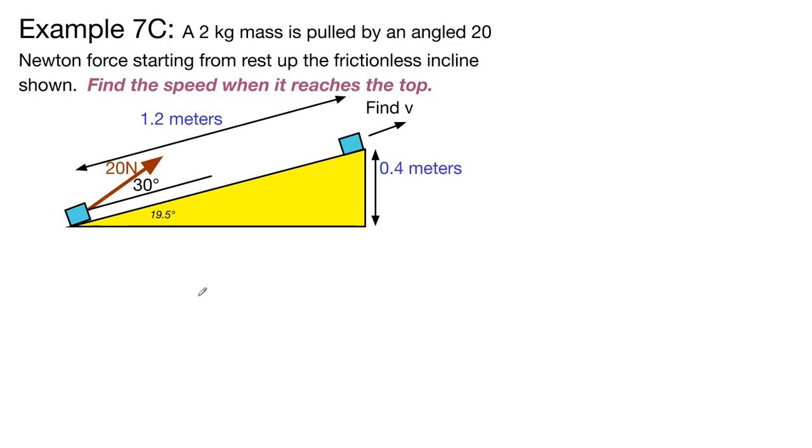So we want to draw this into our notes. It's worth adding a couple of key things here. This 0.4 meters, that is the height, the vertical height. And this 1.2 meters is the distance, D, along the ramp from the start to the finish. This 30 degree angle is going to matter quite a bit. This 19.5 degree angle doesn't matter at all for our purposes.